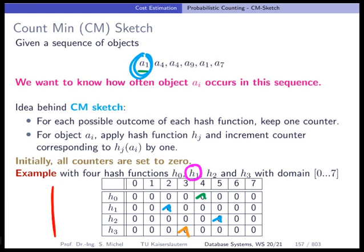And now we go for the next object, a4. We again apply h0 on a4, and this points us here. So we put a 1 here. And now for hash function 1, again for this a4, let's say this points us here to the position for hash function 2. And then we would increment this and have a 2 here instead of a 1. And this continues.